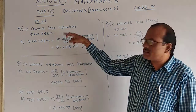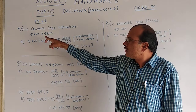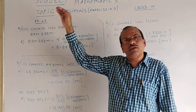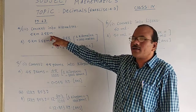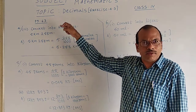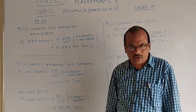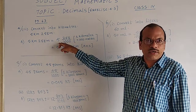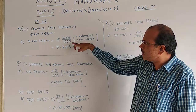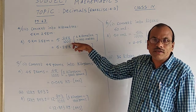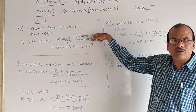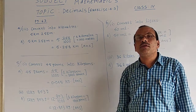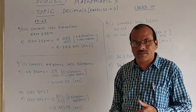Convert into kilometers: 5 kilometers, 258 meters. 5 is already in kilometers, we need not change that. But the other number, 258, that is in meters — that we should convert into kilometers. The meters part should be divided by 1,000, because 1 kilometer is equal to 1,000 meters. That's why the meters should be divided by 1,000 to convert into kilometers.